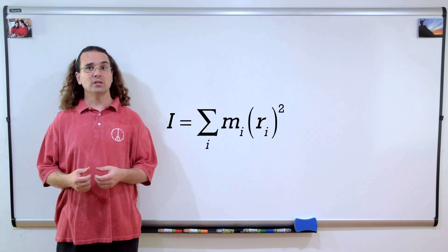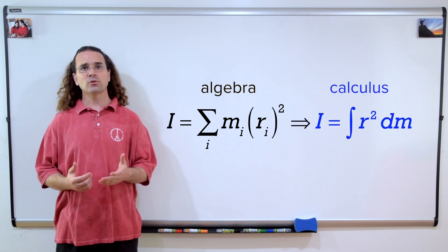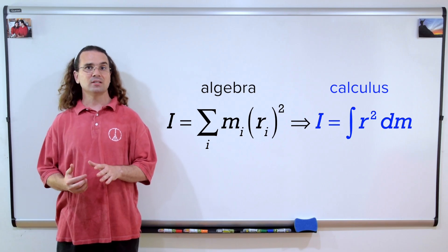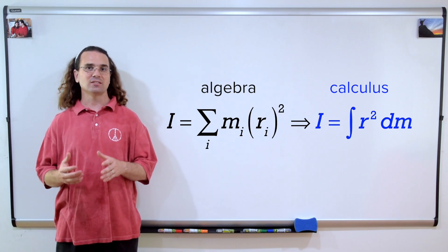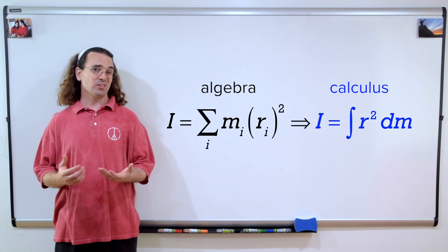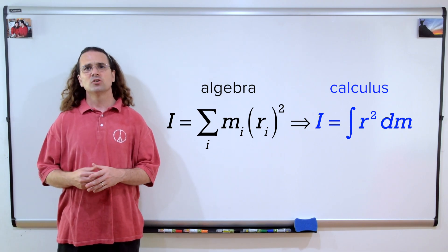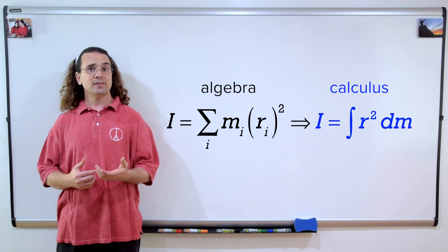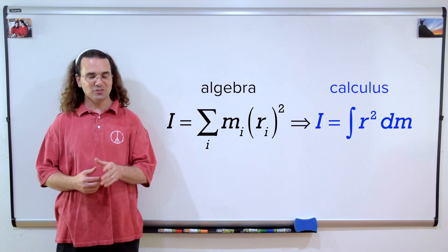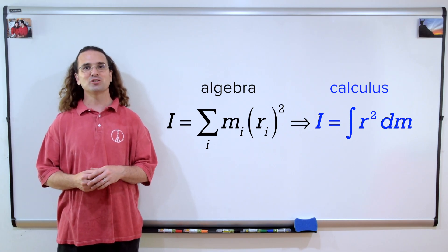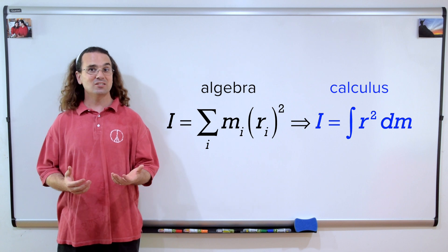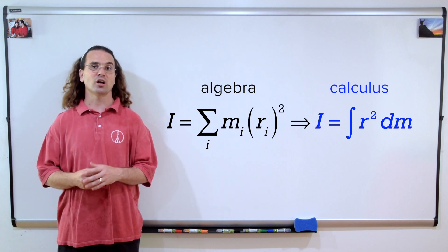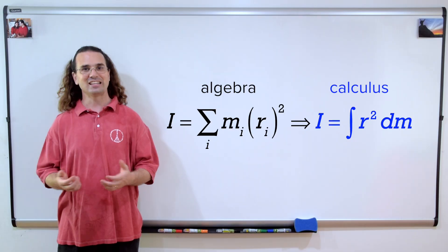Can we use that equation? In order to derive the equations for moments of inertia of rigid objects with shape and constant density, we would need to use calculus. The equation we would use is: moment of inertia equals the integral with respect to mass of the square of the distance each piece of the object is from the axis of rotation. However, this is not a calculus-based class, so we are instead going to use the algebraic equation for the moment of inertia of a system of particles to estimate and understand the equations for moments of inertia of rigid objects with constant density.